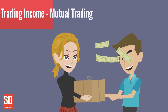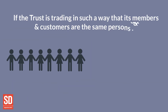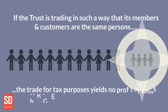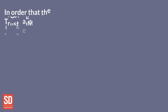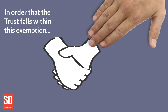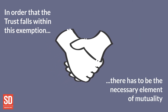Mutual Trading Income. If the trust is trading in such a way that its members and its customers are the same persons, the trade for tax purposes yields no profit or gains and therefore there will be no assessment to tax. In order that the trust falls within this exemption, there has to be the necessary element of mutuality. In particular, it is essential that the profits should be capable of coming back at some time and in some form to the person to whom the goods were sold or the services rendered.